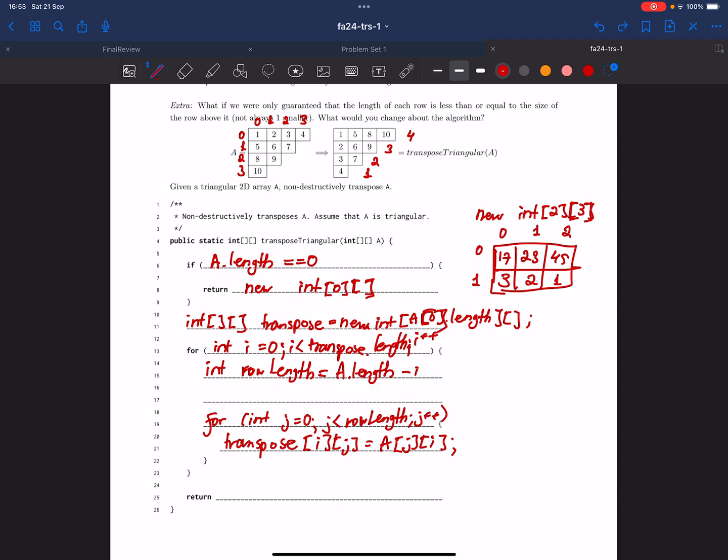Initially, A.length will be equal to four. On the next iteration, it will be equal to three, then equal to two, and then it will be equal to one, which is exactly what we want.